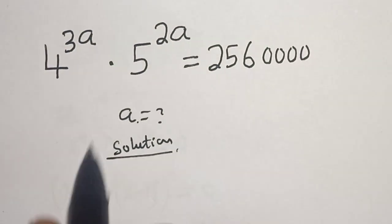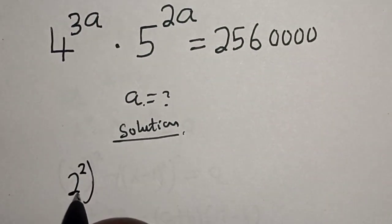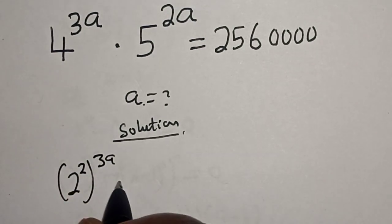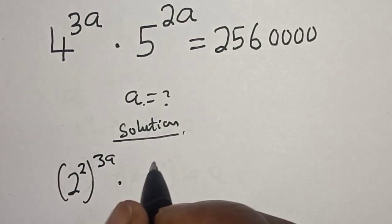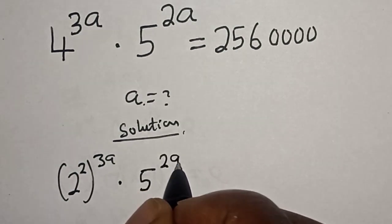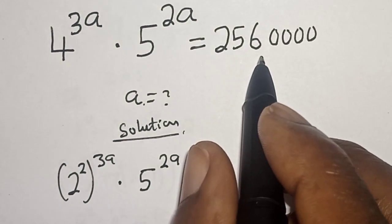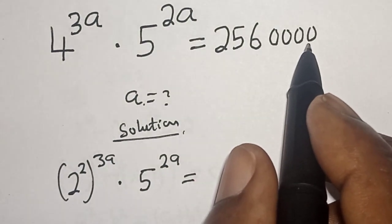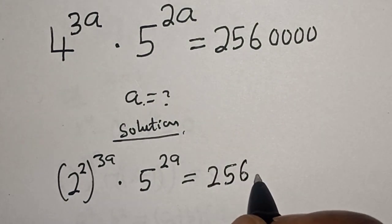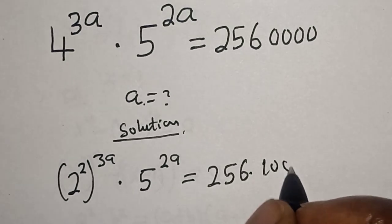4 raised to power 3a can be written as 2 raised to power 2, to the power of 3a, multiplied by 5 raised to power 2a, is equal to 2,560,000, which can be written as 256 multiplied by ten thousand.